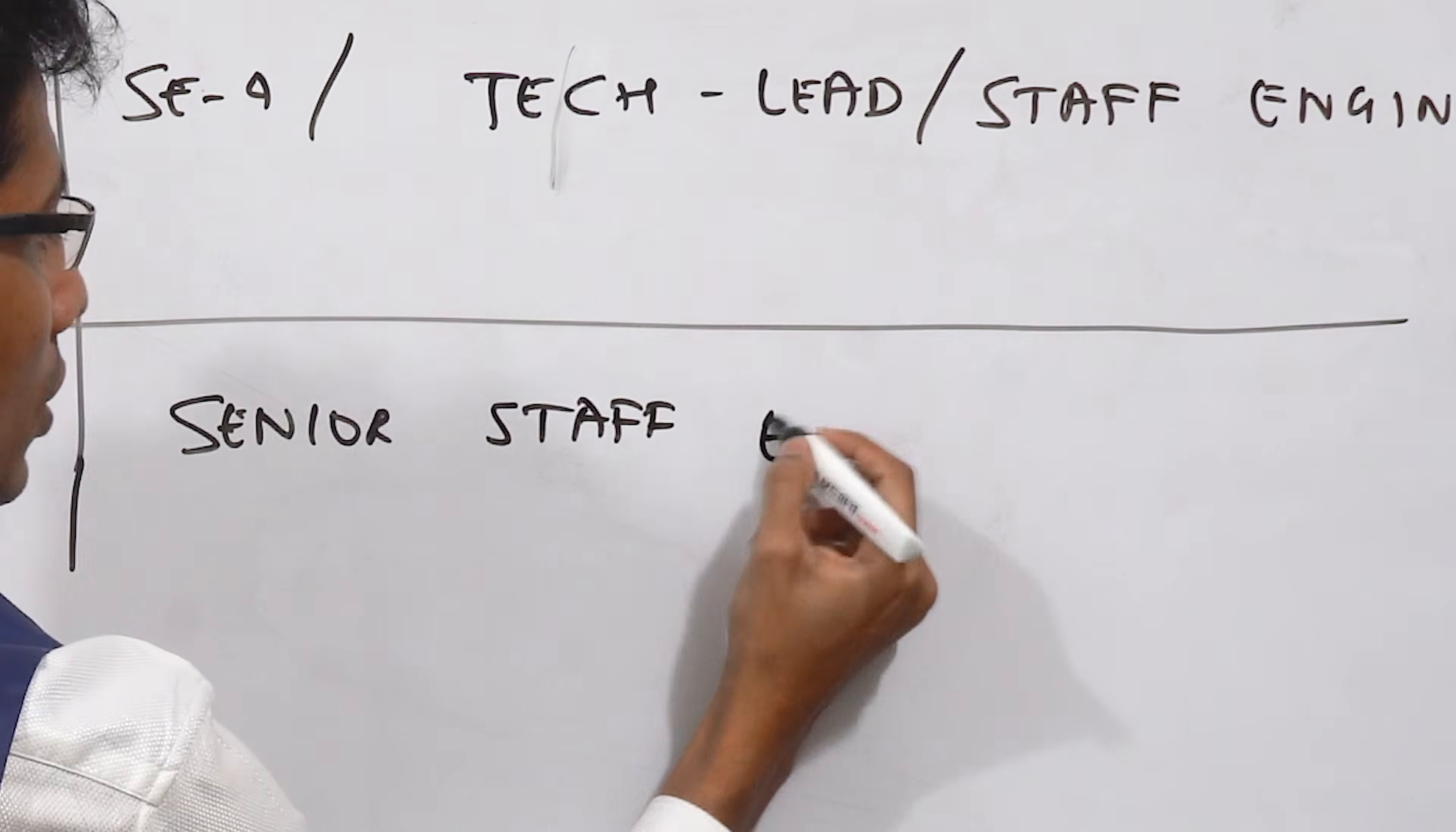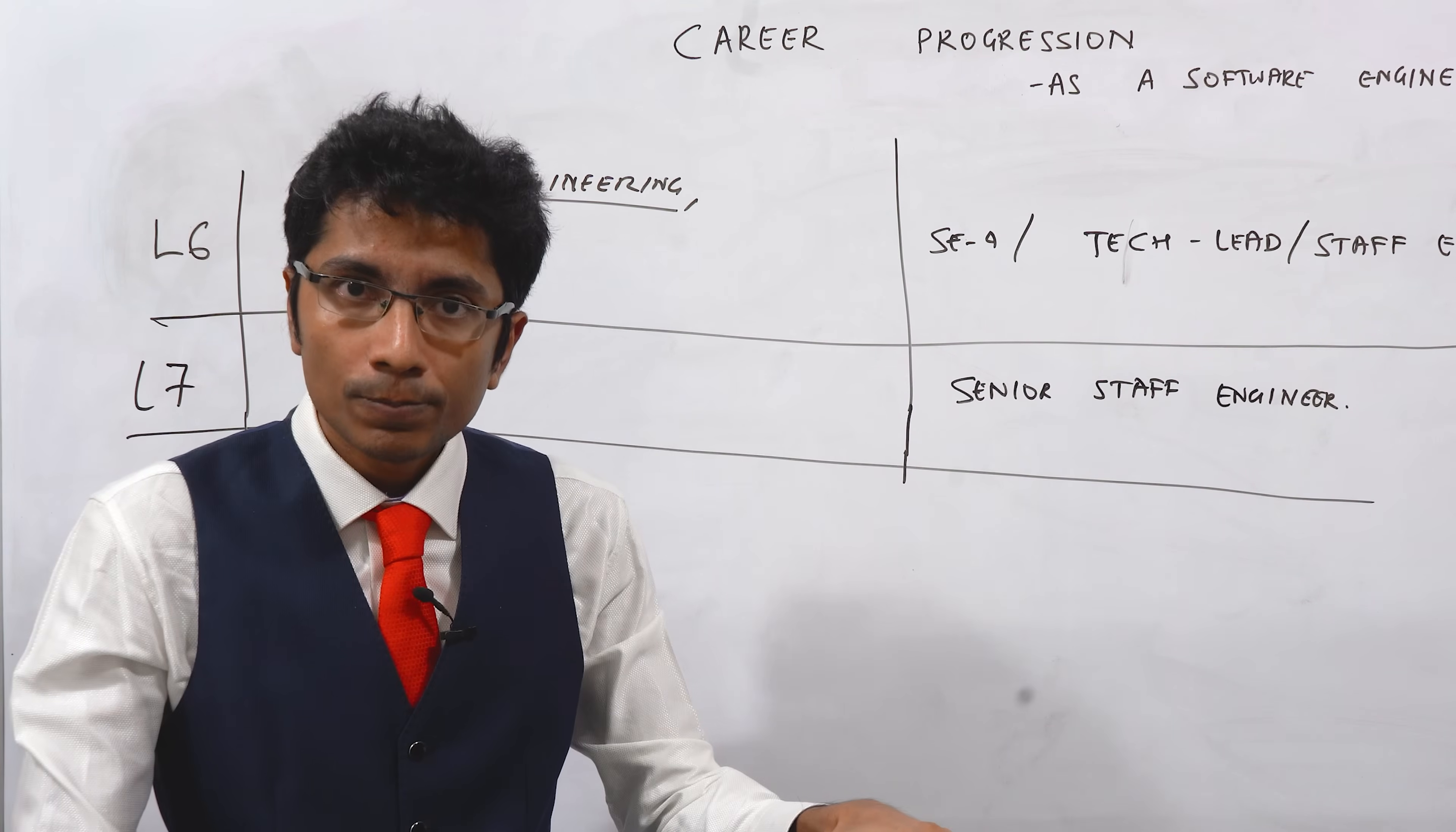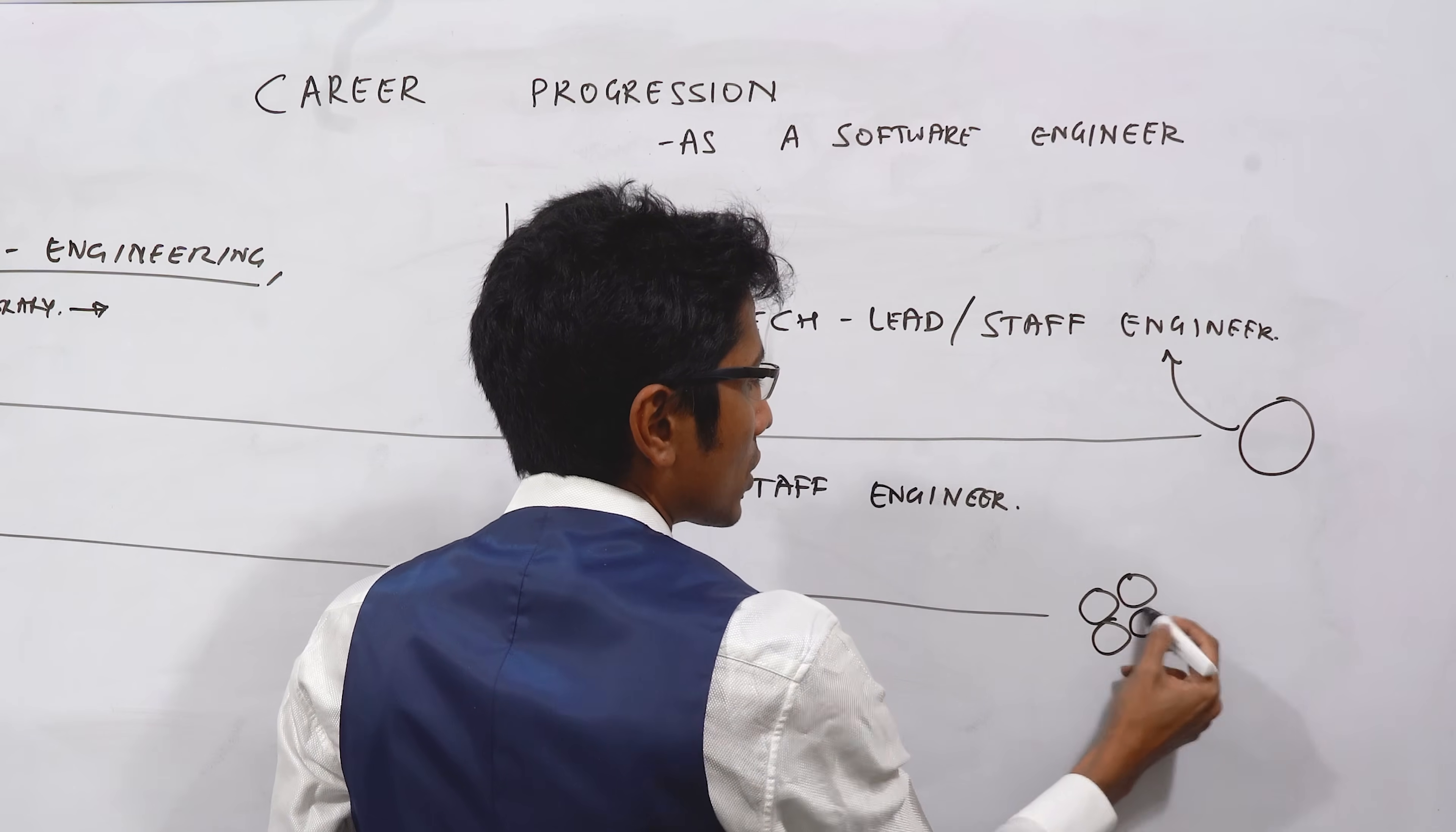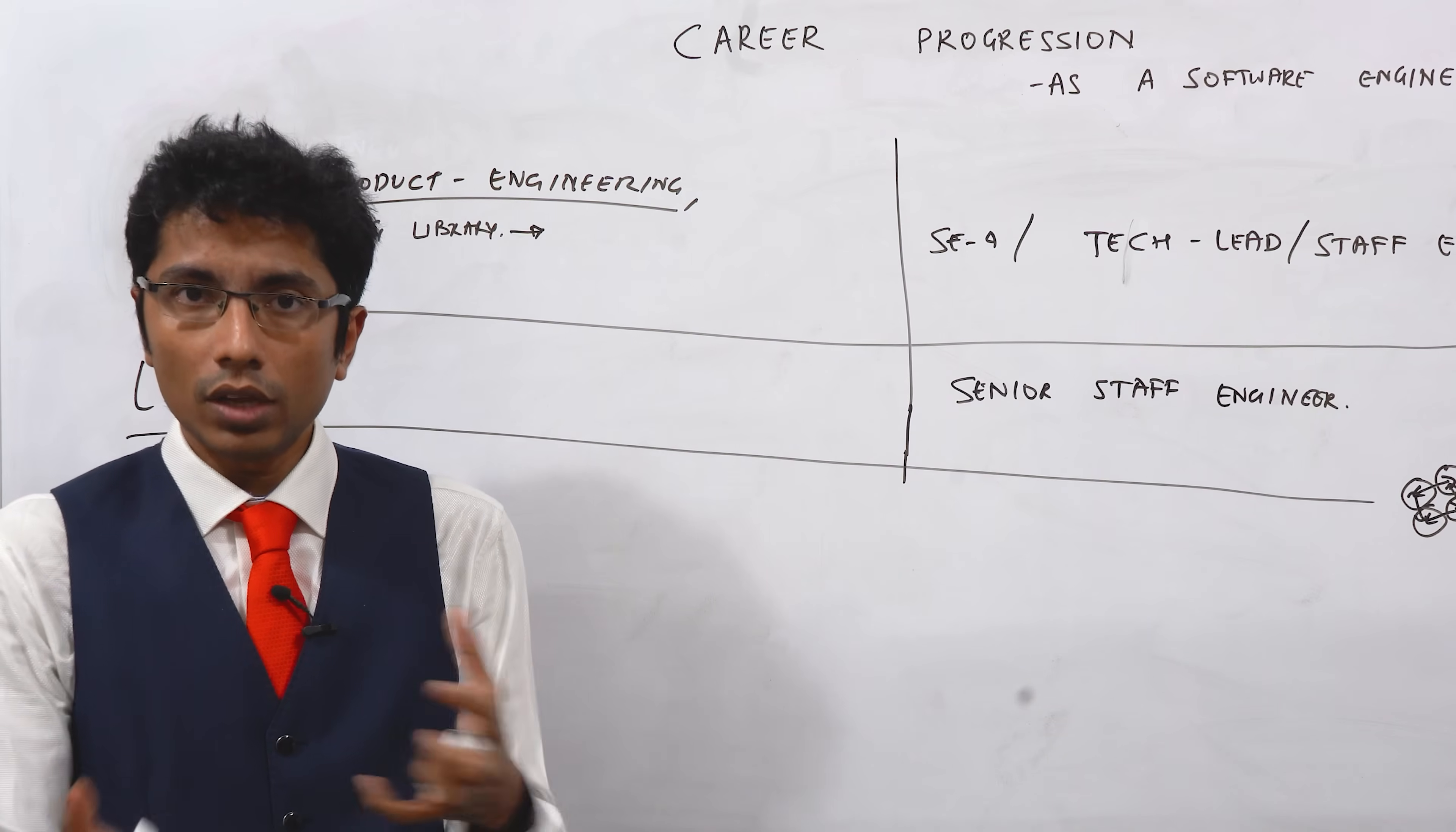Let's go to senior staff engineer. Senior staff engineer does everything that a staff engineer does. They might be guiding other staff engineers on what the overall organization needs, not just one big business unit. Like the finance team has one staff engineer, but the entire organization may have multiple units: operations, logistics, procurement. So the senior staff engineer can help you.